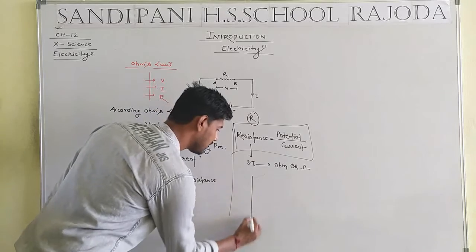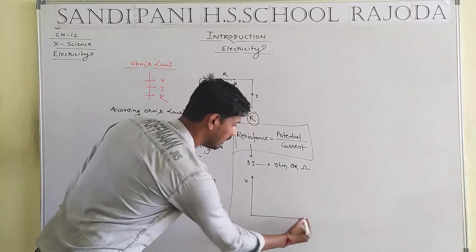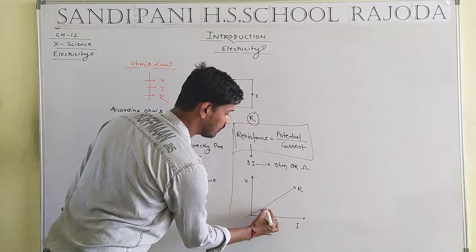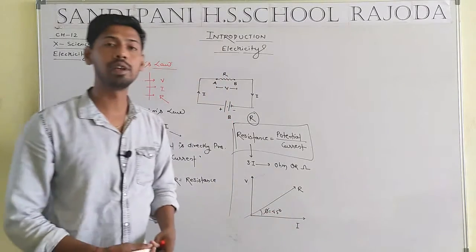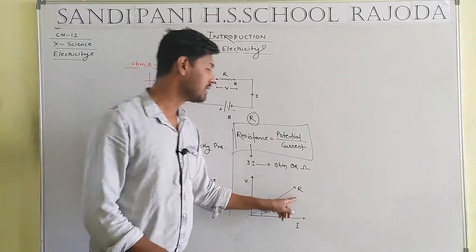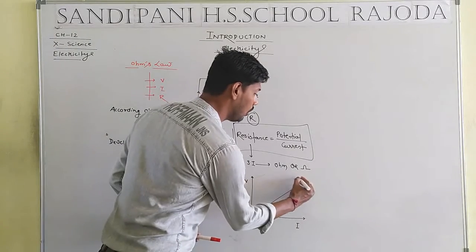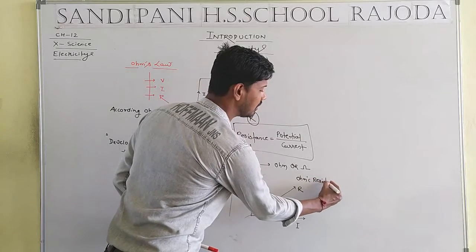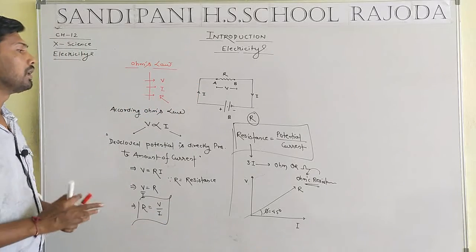If we look at the graphical representation, we plot V on one axis and I on the other. The graph will always be a straight line, which represents resistance. These types of resistances — those which follow Ohm's law — are known as Ohmic resistance.